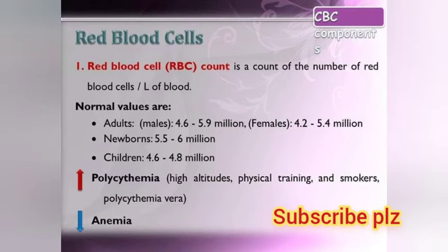The increase in red blood cells is known as polycythemia. High altitudes, physical training, and smoking are conditions associated with polycythemia.